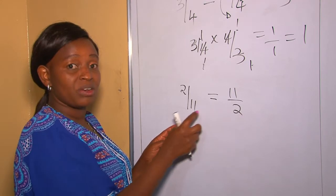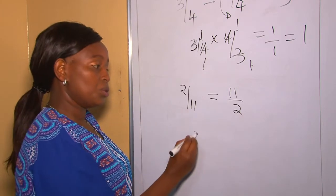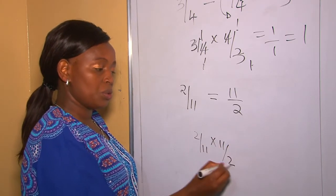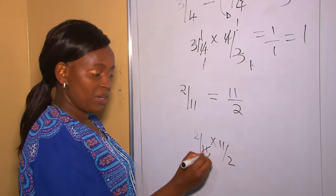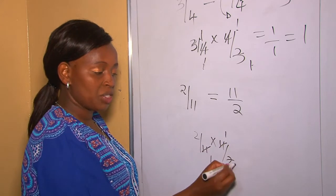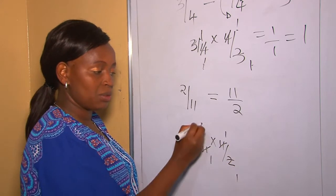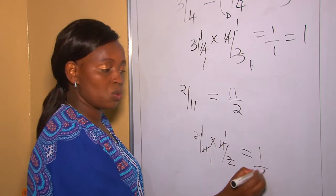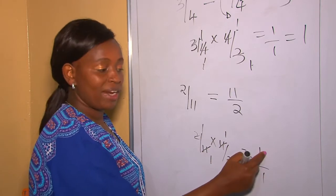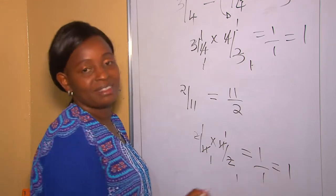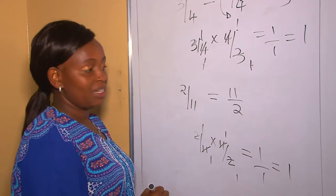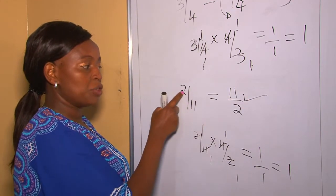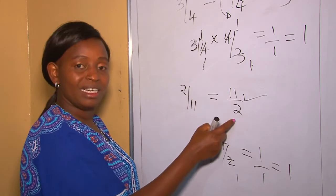Let's prove it. When you multiply the reciprocal and the original number you should get one. So two over eleven multiplied by eleven over two — cross multiplying, one by eleven is one, one by two is one, one times one is one, one divided by one is one. Therefore it's correct that the reciprocal of two over eleven is eleven over two.